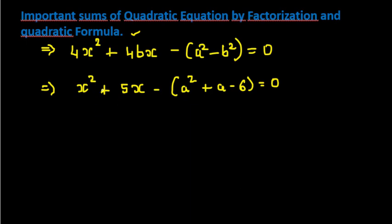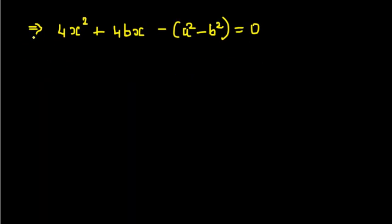Now let us start with question number one. I am going to solve this question by factorization first. In factorization we do splitting the middle term, but here in the constant term you are having a² minus b², so we are going to find out the factors of that separately.